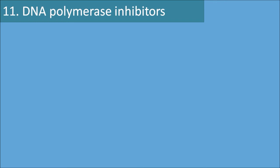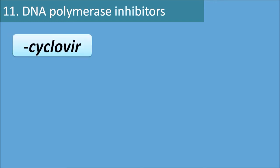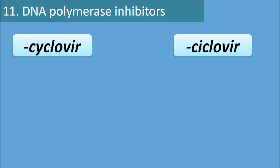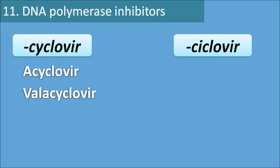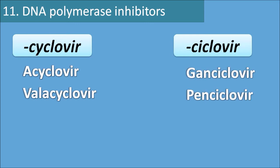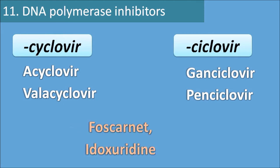The eleventh category is DNA polymerase inhibitors (antivirals), with the suffixes 'cyclovir' (C-Y-C-L-O-V-I-R) and 'ciclovir' (C-I). Drugs ending in -cyclovir include acyclovir and valacyclovir. Drugs with the -ciclovir suffix include ganciclovir and penciclovir. Exceptions include foscarnet and idoxuridine, which are also DNA polymerase inhibitors but have different suffixes.